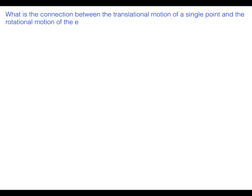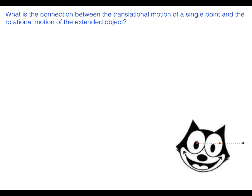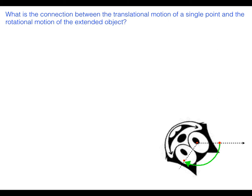So what's the connection between the translational motion of a single point and the rotational motion of an extended object? Here's a point on the cat's head. I'm going to leave the axis of rotation on the eye of the cat. And if I rotate the cat's head through some angle theta, I can also define the arc length that the point passes through as S. And of course, the radius is the distance from the axis of rotation to that point.